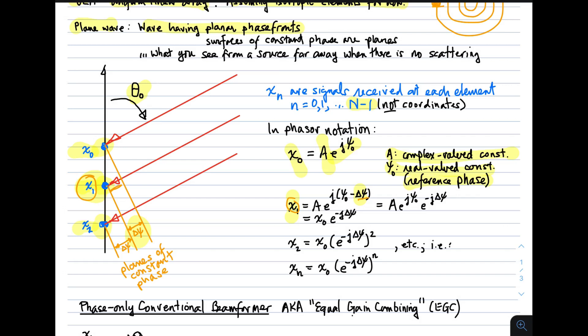So the signal x sub 1 is the same, except the phase is different by delta psi. And note that we can separate this complex exponential into two complex exponentials. The first one being A times e to the j psi 0, and the second one being e to the minus j delta psi. And we recognize that first factor as being simply x sub 0. So we can rewrite this expression as x sub 0 times just a factor which indicates the additional phase accrued because of the propagation. x sub 2 then will be, by the exact same reasoning, x sub 0 times e to the minus j delta psi, but now squared because we'll have twice the distance. And similarly, or extending that idea, x sub n is x sub 0 times e to the minus j delta psi raised to the n.